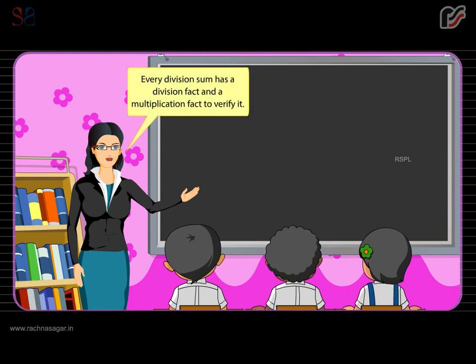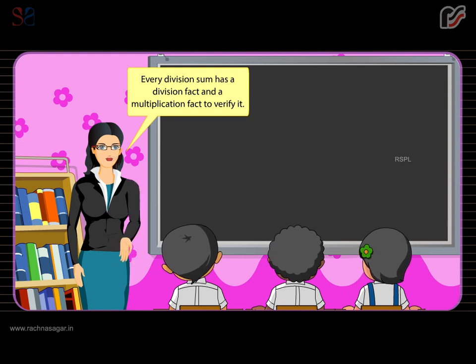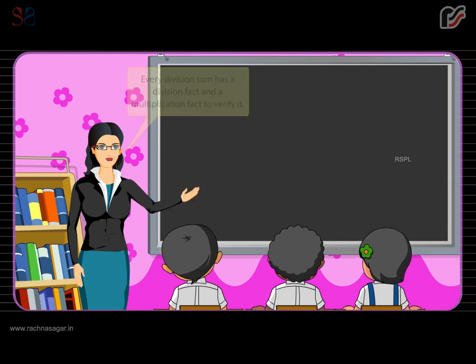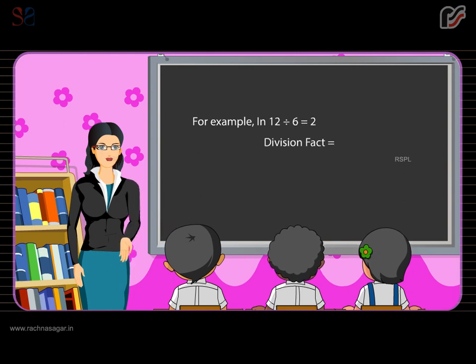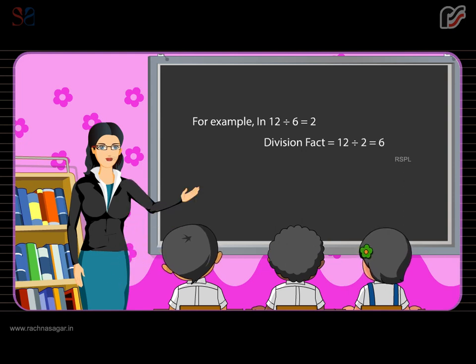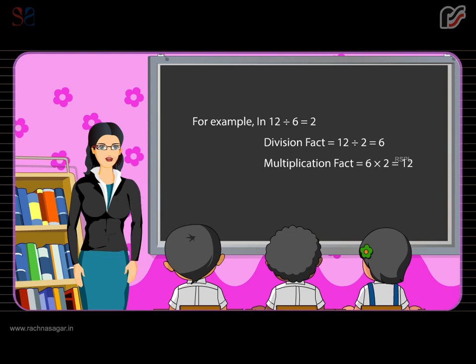Every division sum has a division fact and a multiplication fact to verify it. For example, in 12 divided by 6 is equal to 2: the division fact is 12 divided by 2 is equal to 6, and the multiplication fact is 6 times 2 is equal to 12.